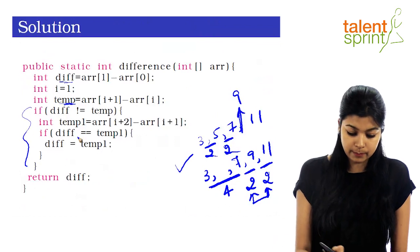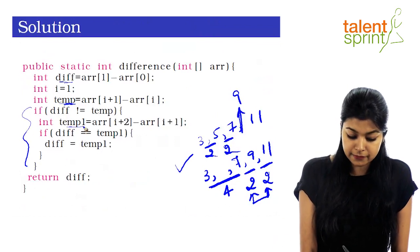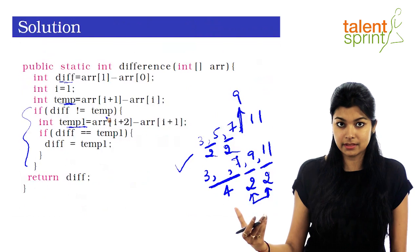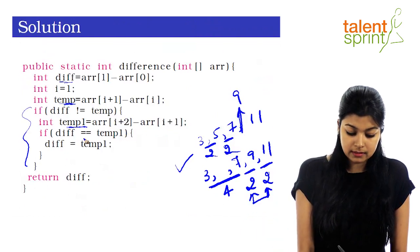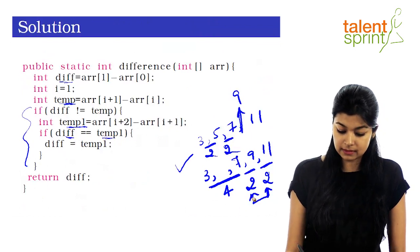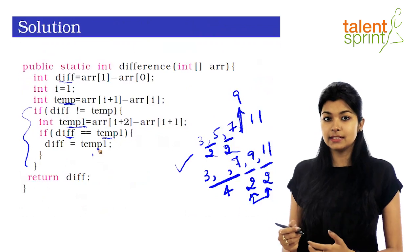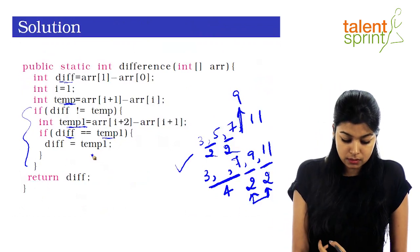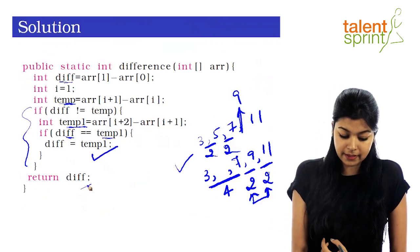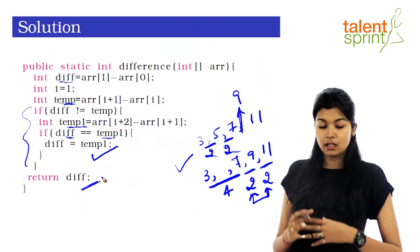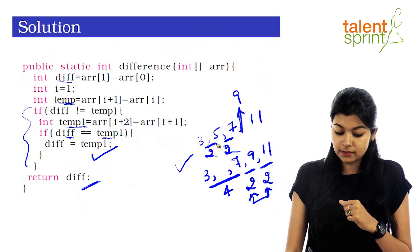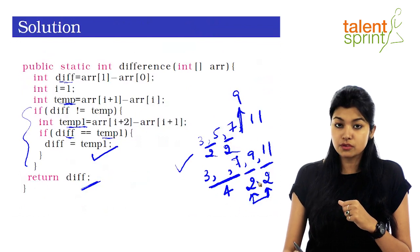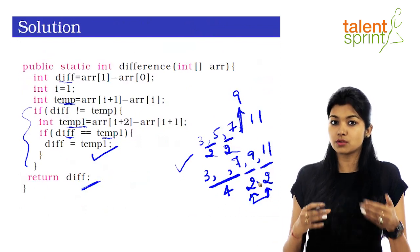If both are not the same, we calculate another difference — temp1 — using the next consecutive set at indices i+2 and i+1. If the original difference equals temp1, we assign that to our variable 'div' and finally return it. To reiterate: we calculate the difference between three consecutive pairs to conclude what the actual AP difference is, then return it through the function.